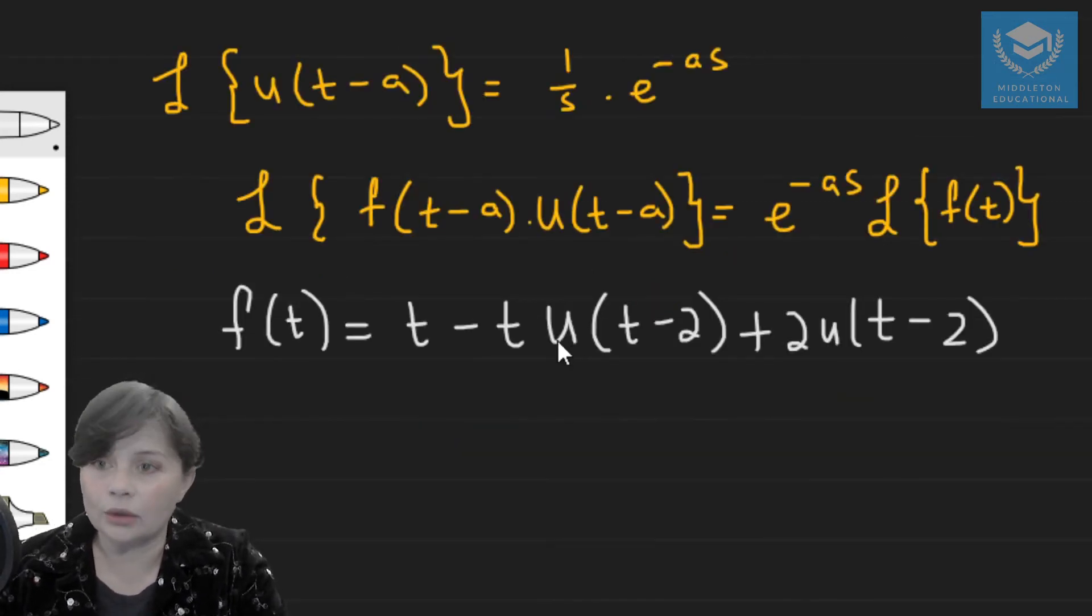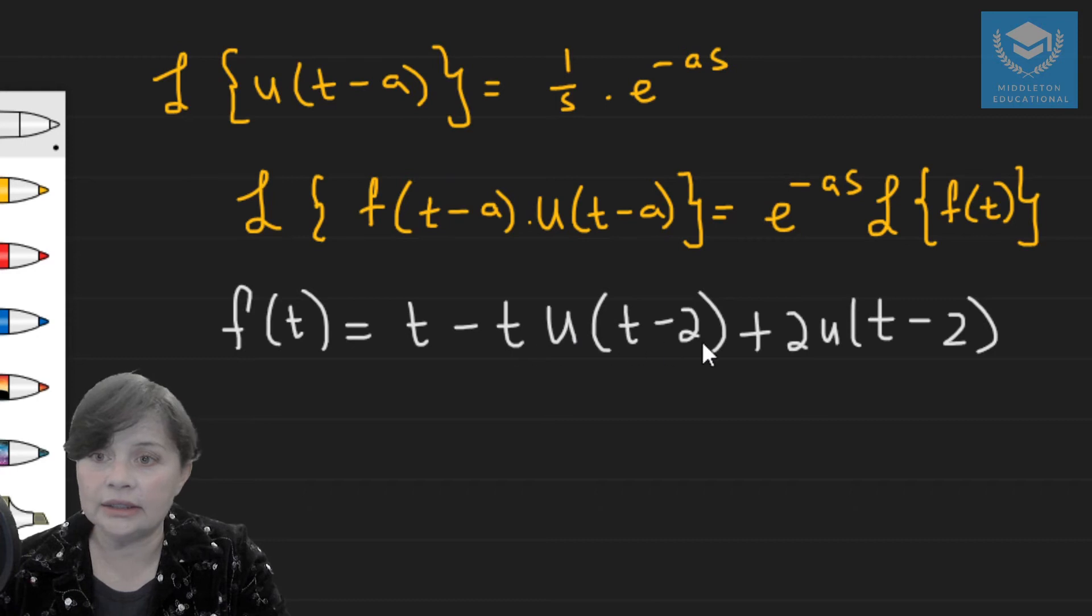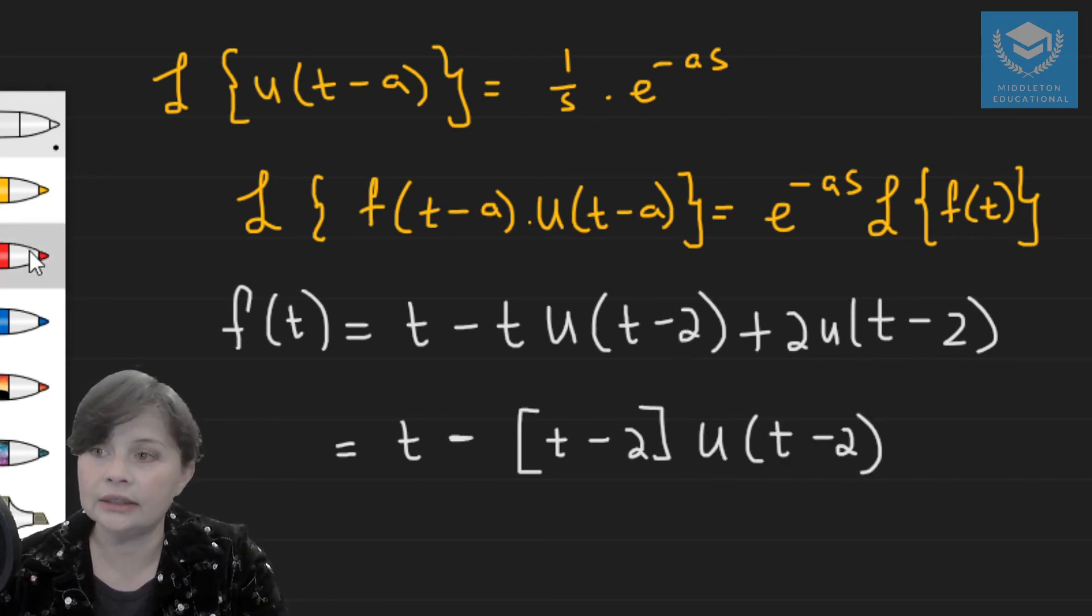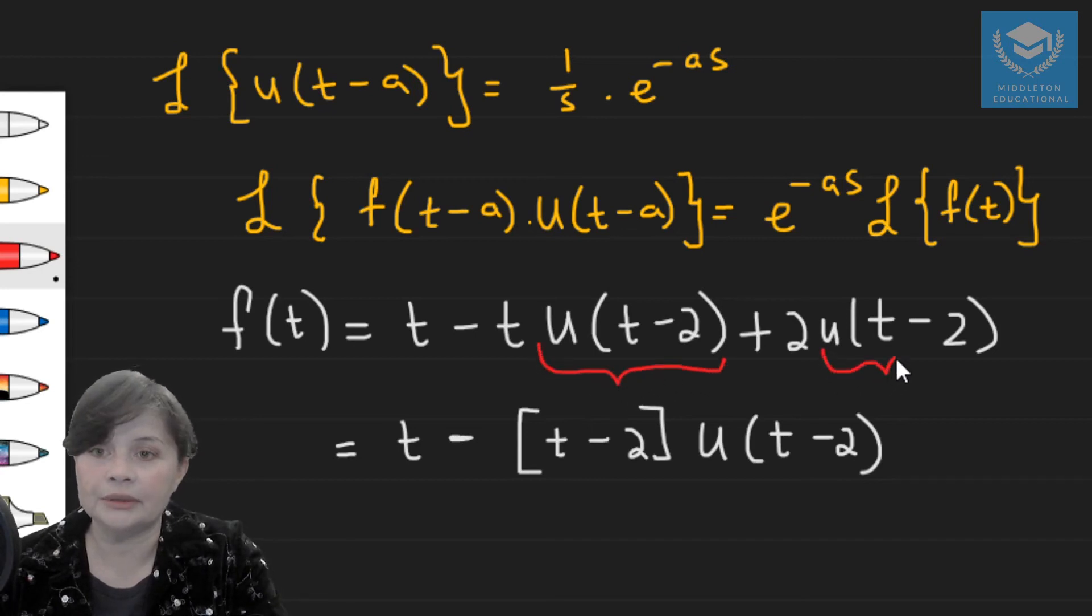So if my goal is to have t minus 2 in front of the u, you see you've got a t here and you've got a 2 there. You can factorize. So if I was to write t and I take out a negative and I say minus (t-2) times u(t-2), because you'll see here that u(t-2) is in fact common. So I've just factorized it out.